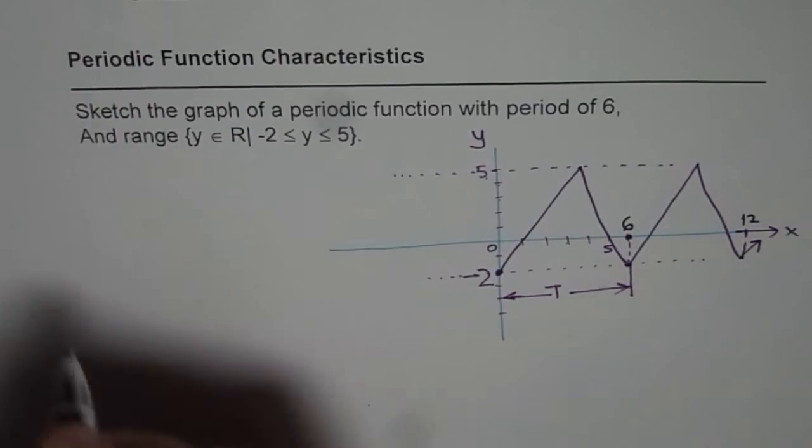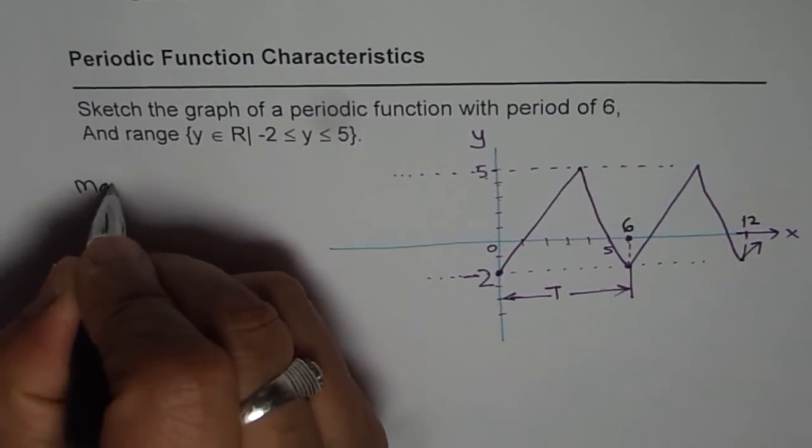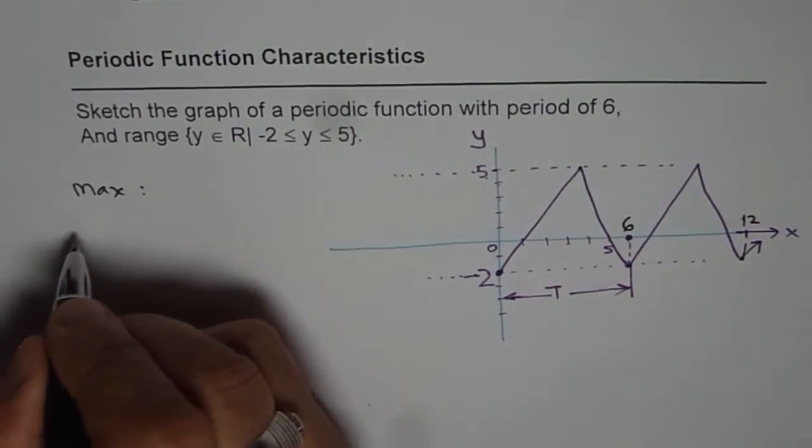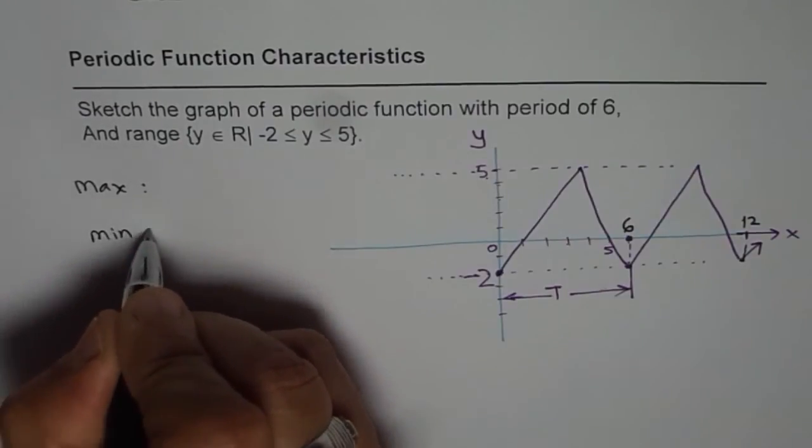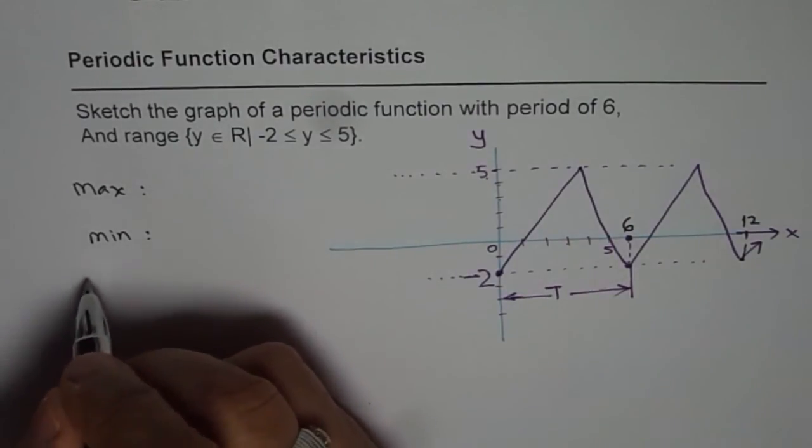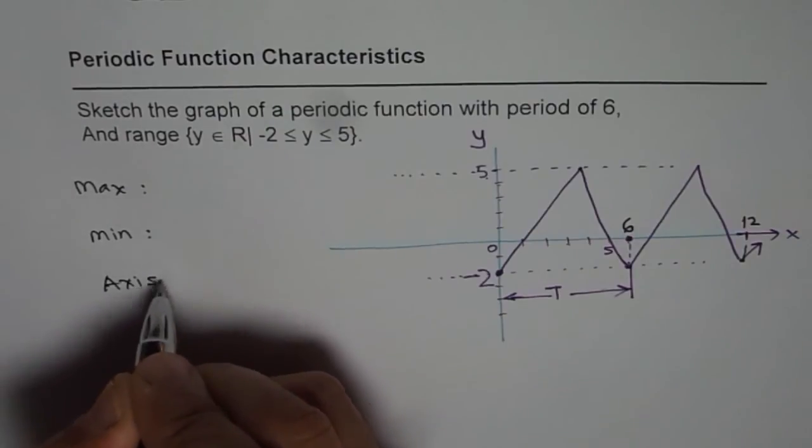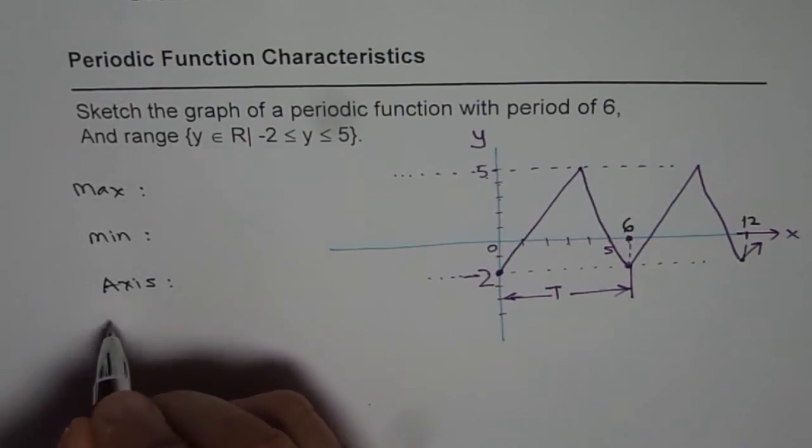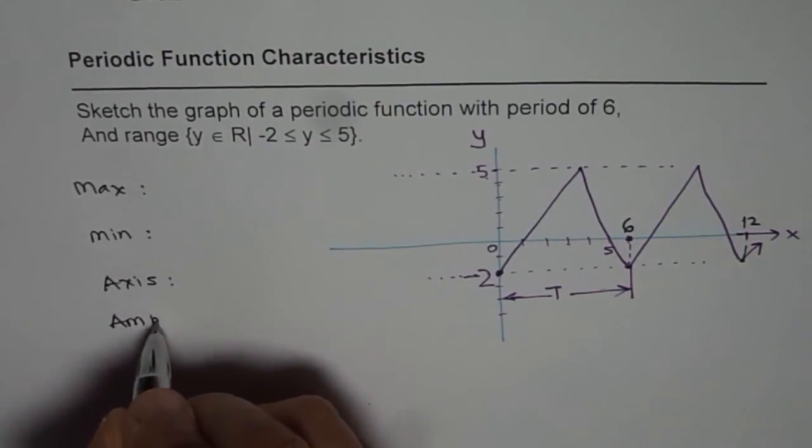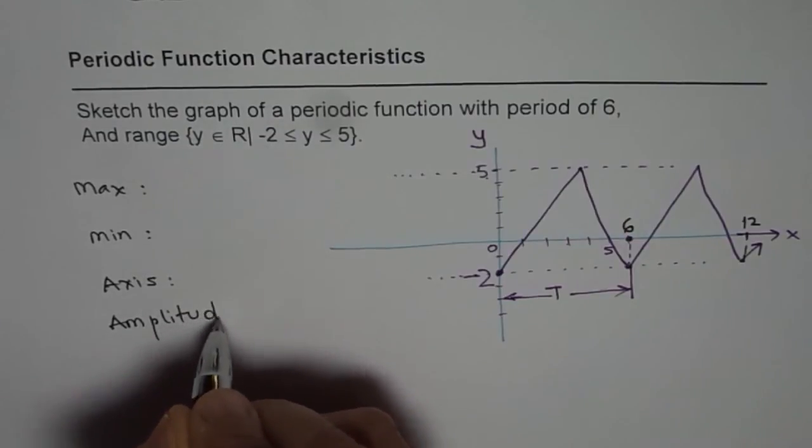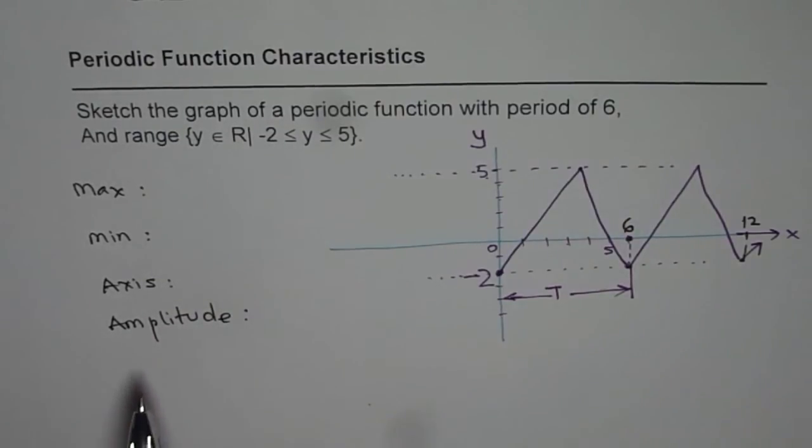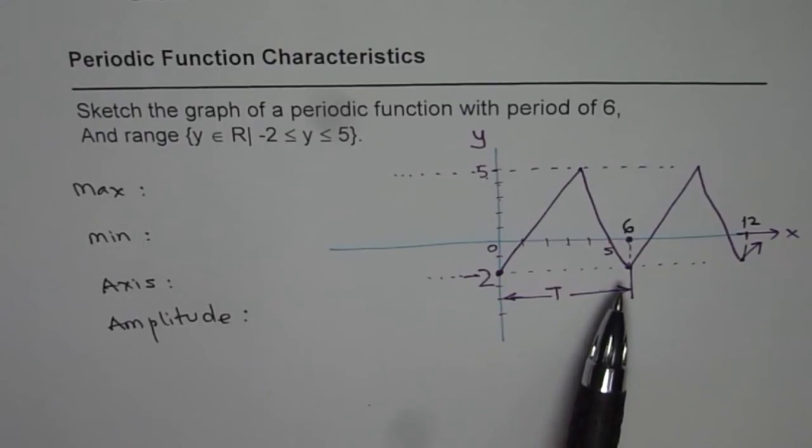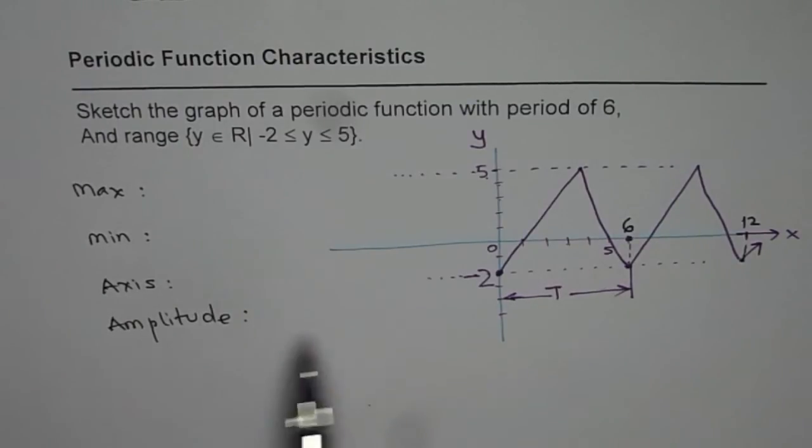Now as an exercise for you, what you should do is you should write down what is the maximum for this periodic function, what is the minimum for this periodic function, and how about its axis and amplitude. So figure out what is the axis for this periodic function and what is the amplitude for this periodic function. I think that will help you to review the characteristics which we have learned so far. Thank you and all the best.